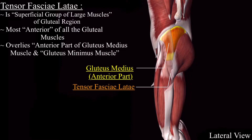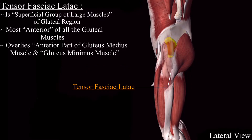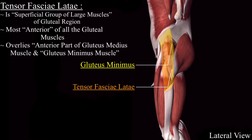Now if I remove the gluteus medius muscle, then underneath it is the gluteus minimus muscle, and the tensor fasciolata is also covering the gluteus minimus muscle.